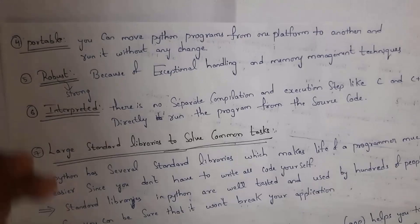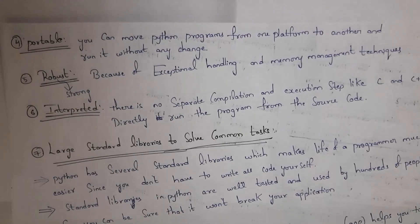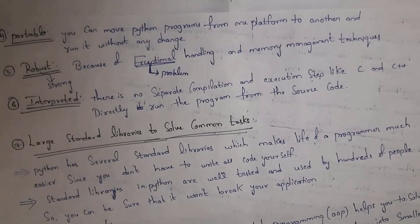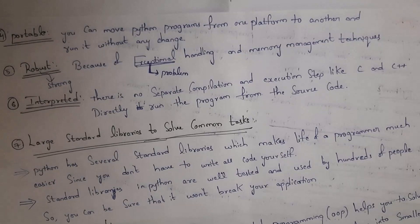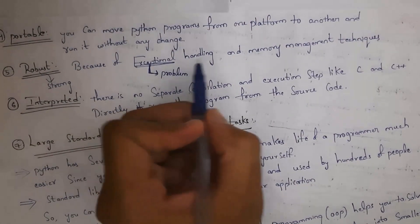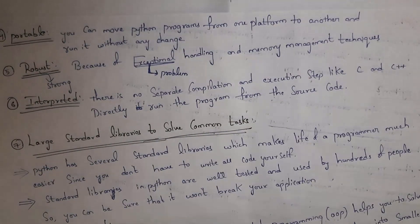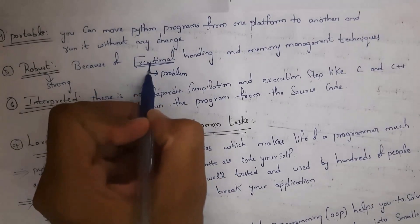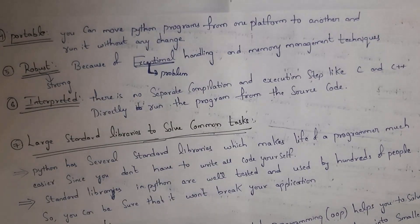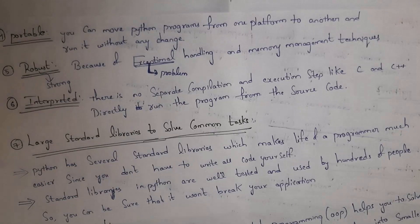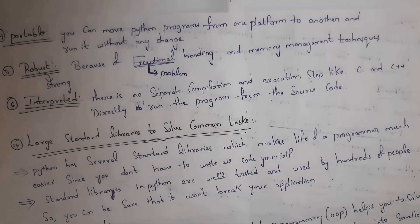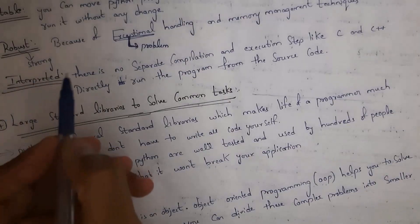The fourth feature is portable — you can copy Python programs from one system to another without any changes. The fifth feature is robust, meaning strong. Python is a strong programming language because of its exception handling and memory management techniques. Exception handling means that if any problem occurs, Python has the capability to handle those problems.